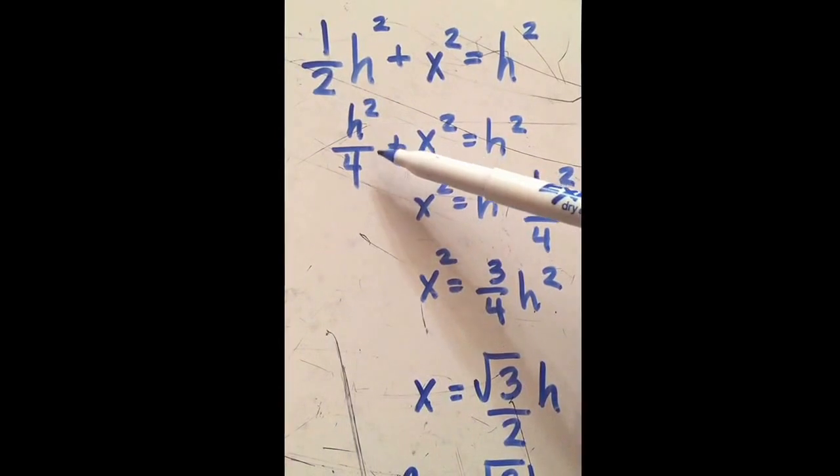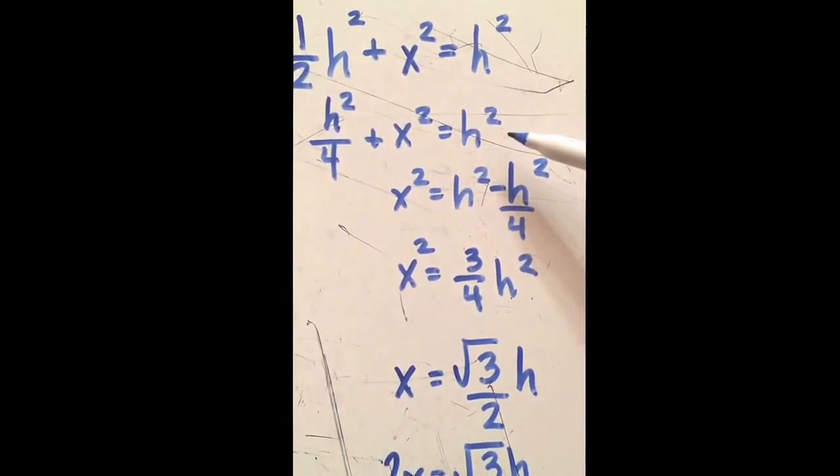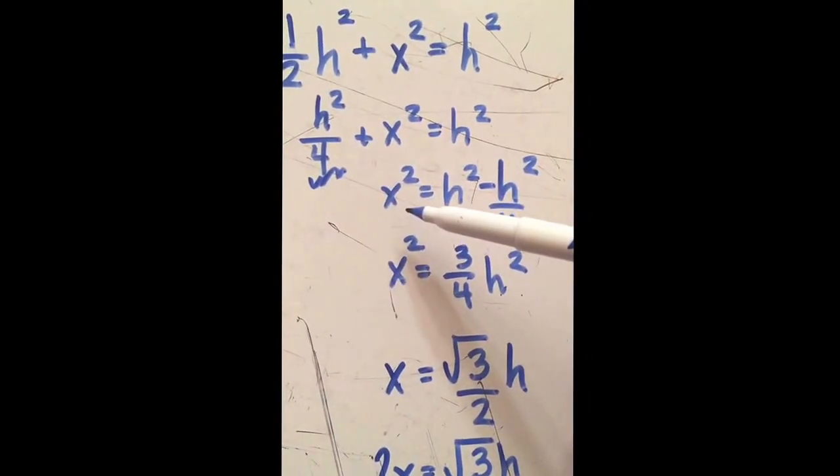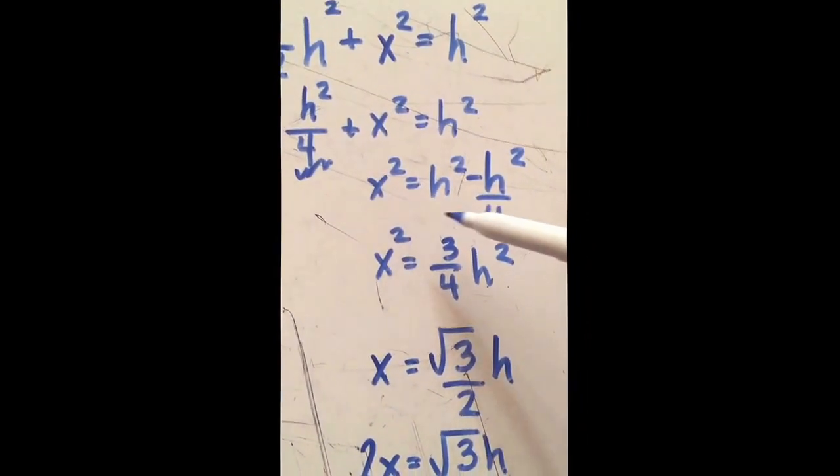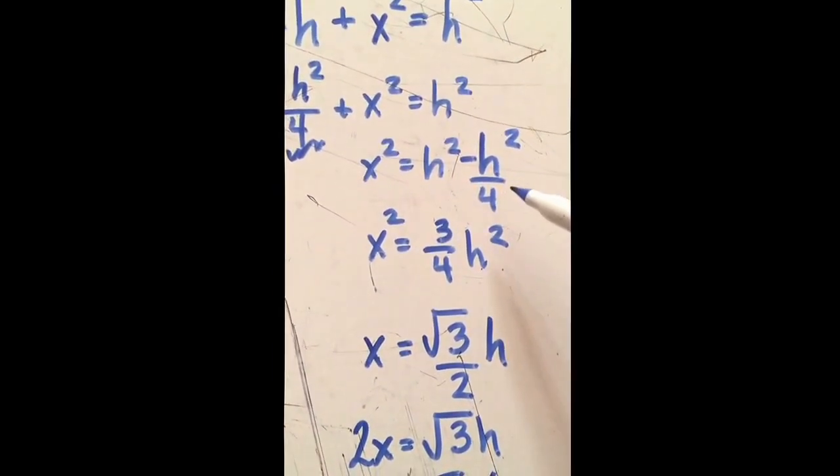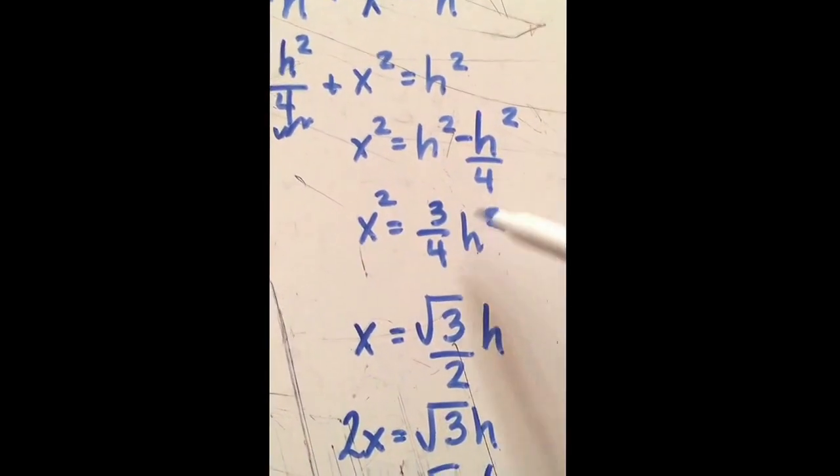I knew that half of my hypotenuse—that bottom side squared—plus the height I don't know makes my hypotenuse squared. So I just started working with my exponents. I got rid of the half and just put h squared over 4 plus x squared equals h squared.